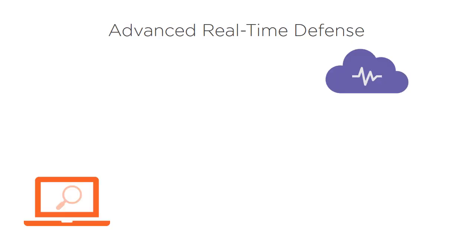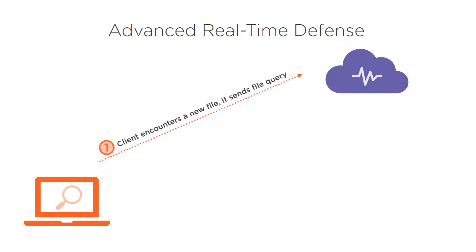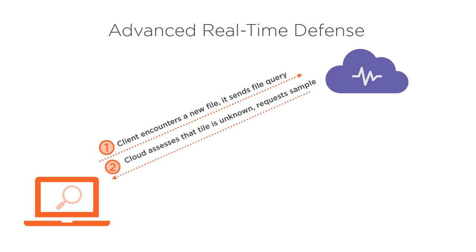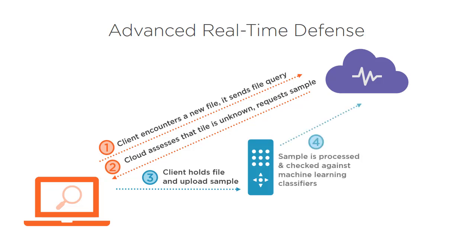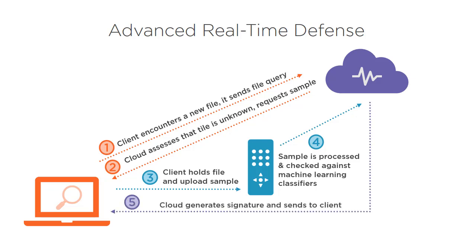The new way of defending against attacks is by utilizing the power of the cloud and the Intelligent Security Graph in Microsoft. Microsoft Intelligent Security Graph provides rich signals from vast security intelligence, machine learning, and behavior analytics. When Windows Defender encounters a new file that it does not know is bad or good, it sends a file query to the cloud. If the cloud knows about this file, it provides feedback to the endpoint; otherwise it asks for a sample. The client holds the file and uploads the sample to the cloud. The cloud services process the sample and check against machine learning classifiers to find out whether the file is good or not. If the file turns out to contain malicious code, it generates a new signature and sends it back to the client along with other clients.